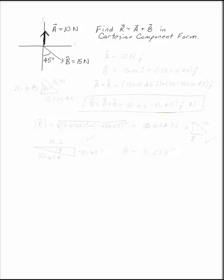To add these up, A is 10 Newtons up and B is 15 Newtons at 45 degrees below the horizontal. Find the resultant in Cartesian form.